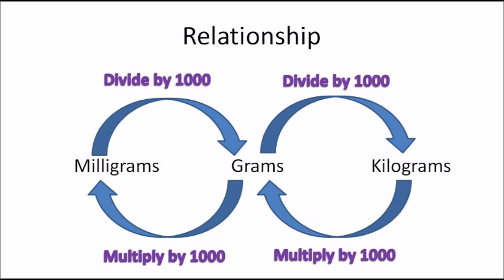If you need to convert milligrams to grams, you divide by 1000, because milligrams is a smaller unit of measure compared to grams. If you go back from grams to kilograms, that's when you multiply by 1000 to get your measurement in kilograms.